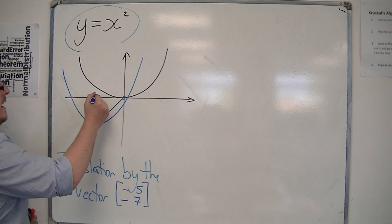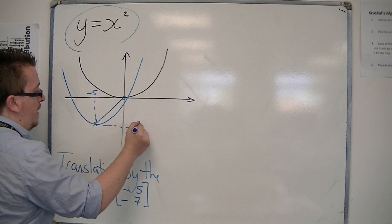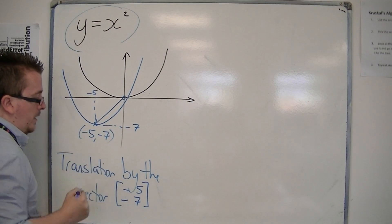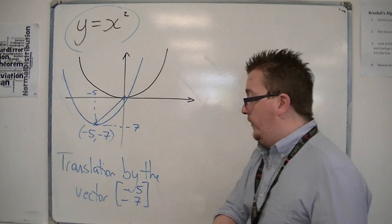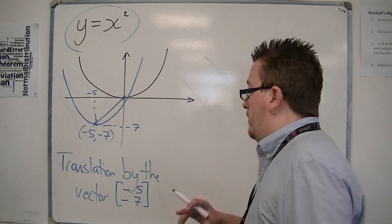So we're now at minus 5 and minus 7. So we replace the x with x plus 5 and we replace the y with y plus 7.